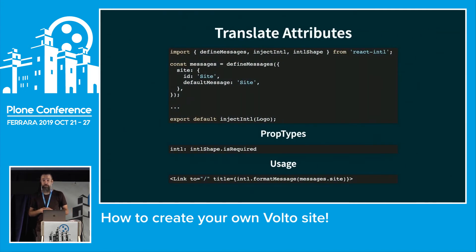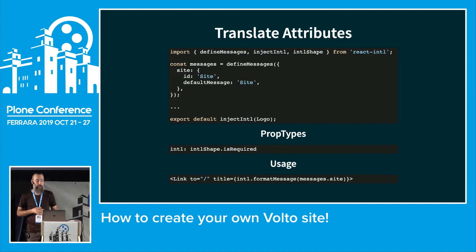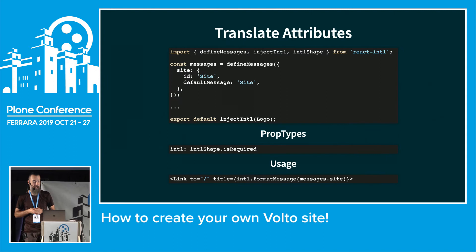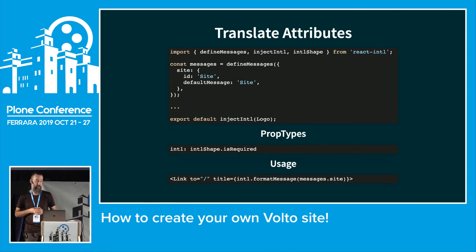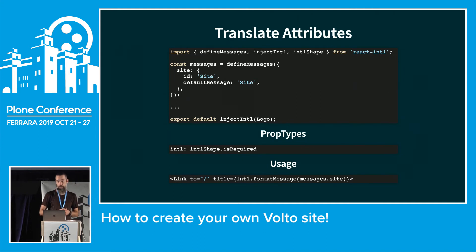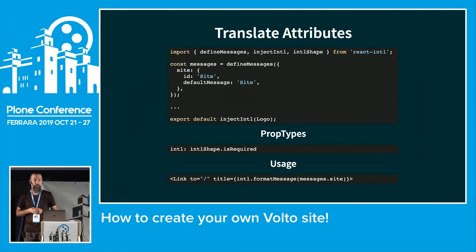When translating HTML attributes, it's a bit different since it's just a string. React-intl provides helper methods for that: defineMessages to define translatable strings, injectIntl which is a decorator wrapping your component so the translation machinery is available, a PropTypes definition, and intl.formatMessage to pass the message you want to display at that location.